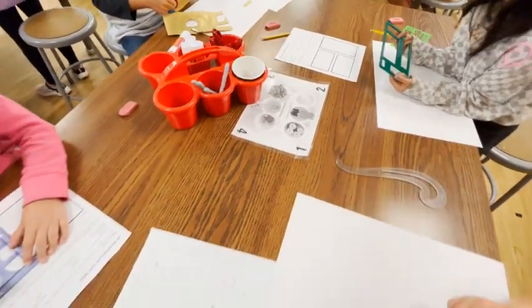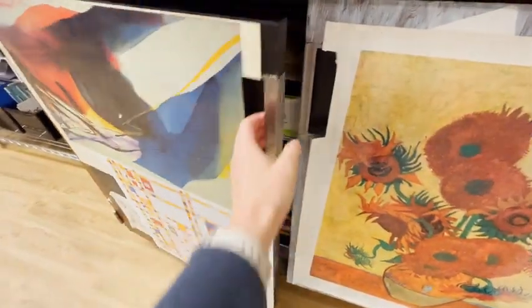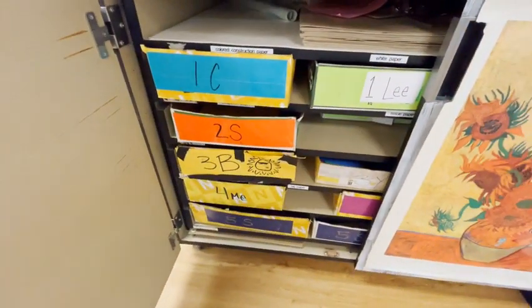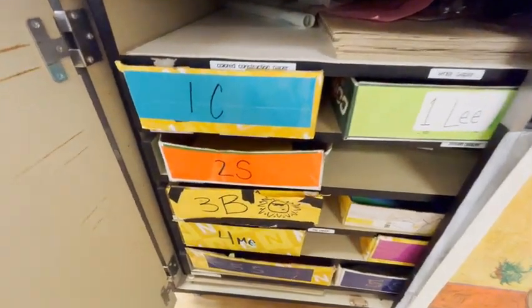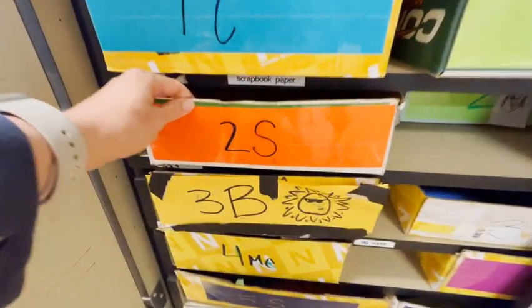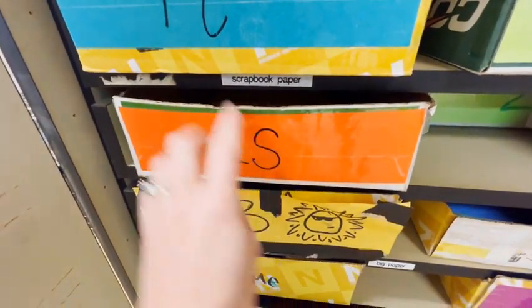When I ask the artwork administrator to get the folder, you're going to come over and find the box with your class code. If you were in second grade and you had Miss Swanson, this would be your box. Second grade Swanson.